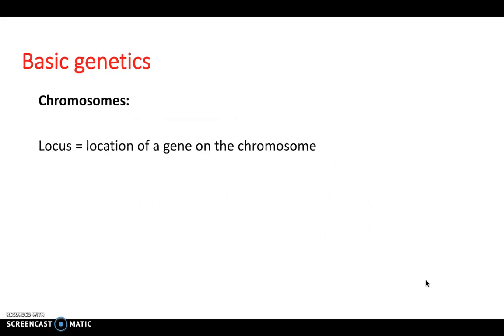So chromosomes have a locus, and this is the location of a gene on the chromosome, and an allele. And that is one variant form of a gene at a particular locus. So these are key terms to be aware of when thinking about genetics, because it will help you understand the whole module.